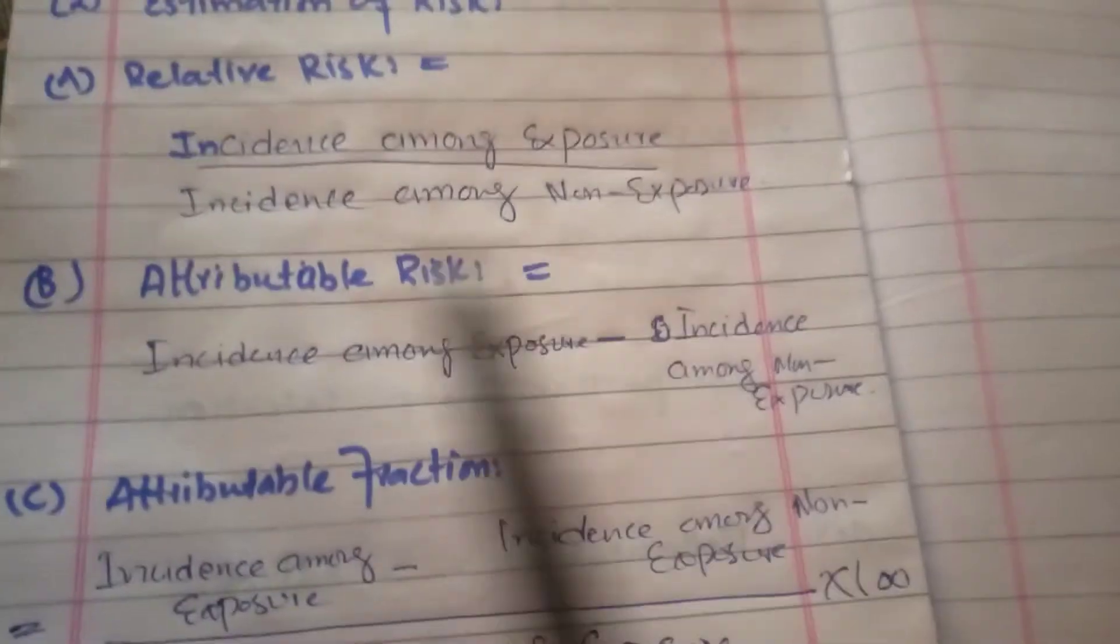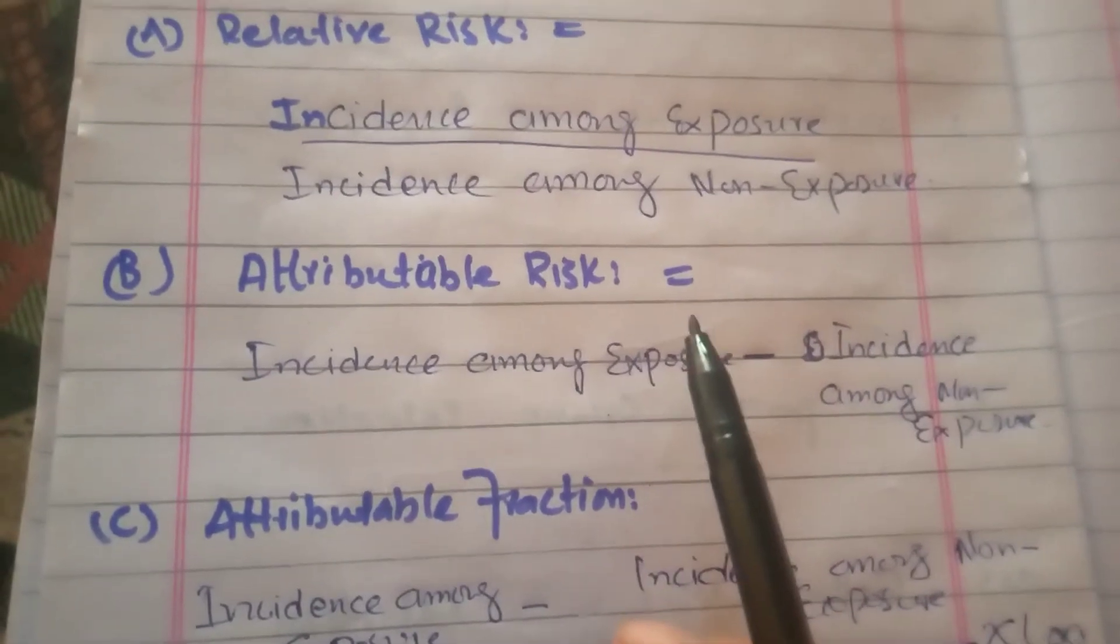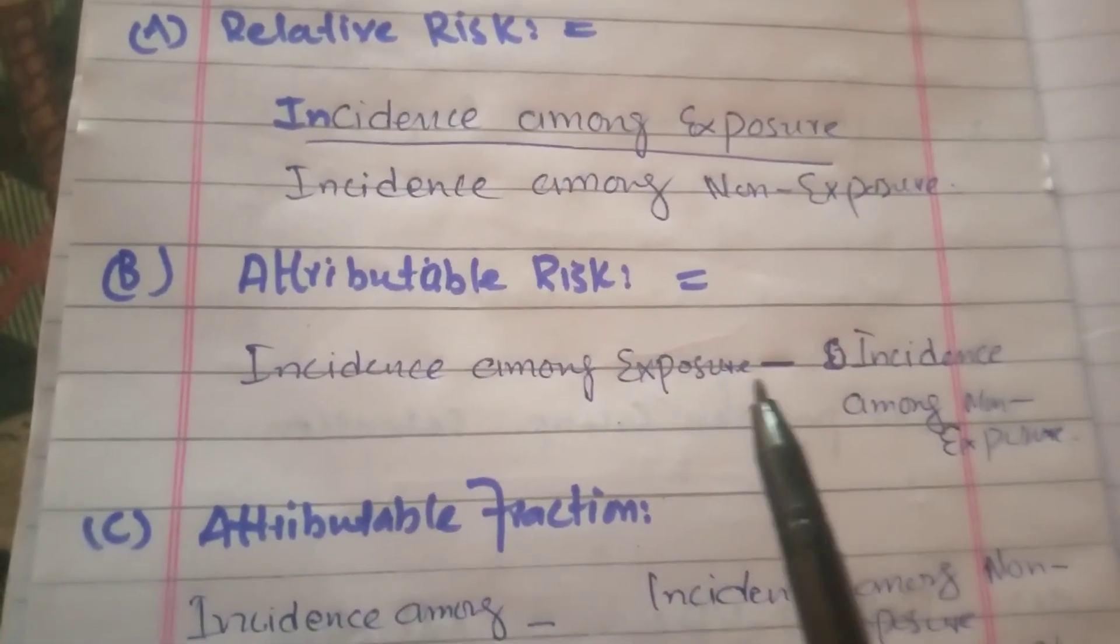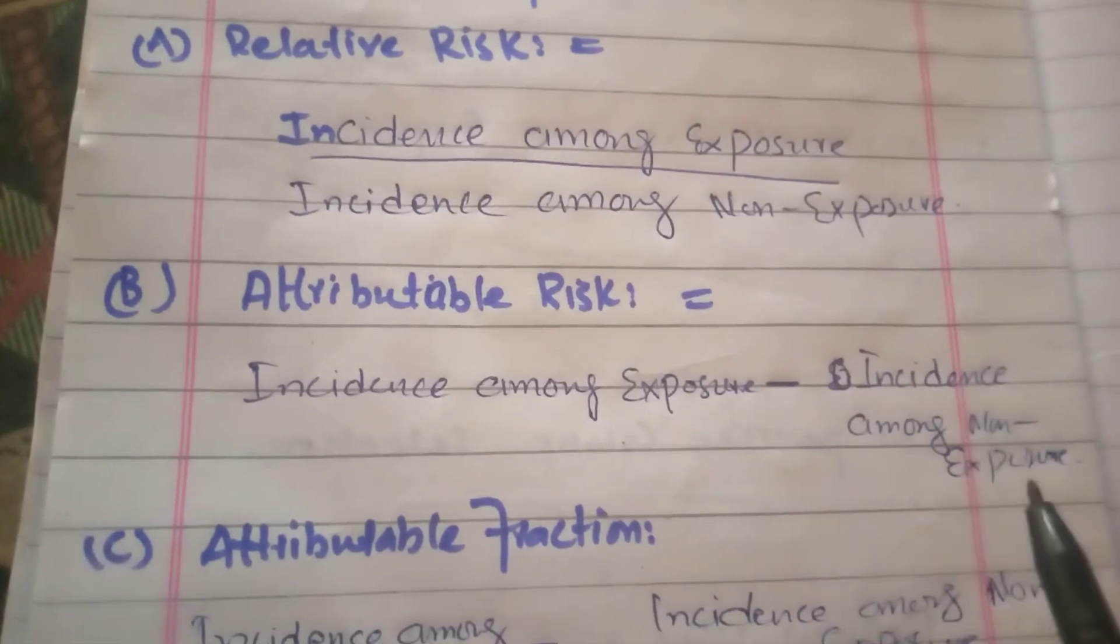Attributable risk - attributable risk shows how much risk is contributed. It is also called attributable difference, so difference means incidence among exposure minus incidence among non-exposure.